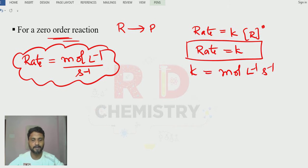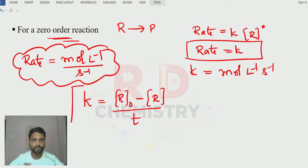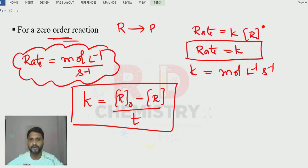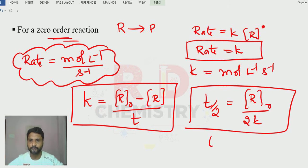The integrated rate equation for zero order reaction is: K = ([R₀] − [R]t) / t. The half-life for zero order reaction is: t½ = [R₀] / 2K.